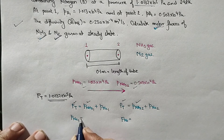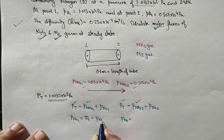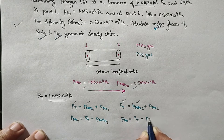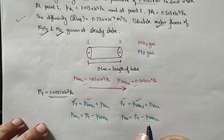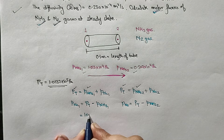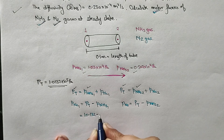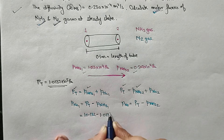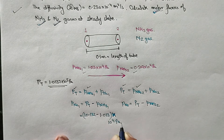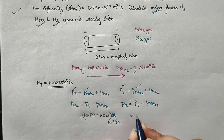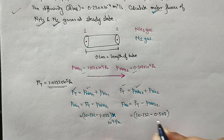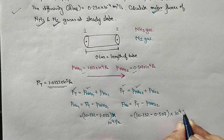We know the total pressure and the partial pressure of ammonia at both points, so we can easily calculate the partial pressure of nitrogen. P_N₂(0.1) = (10.132 − 1.013) × 10⁴ Pascals, and P_N₂(0.2) = (10.132 − 0.507) × 10⁴ Pascals.